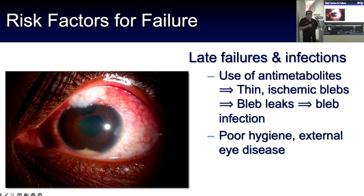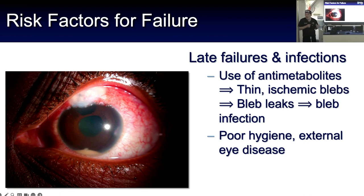This is a patient in whom I did a trabeculectomy in his 20s, and he showed up about 10 years later with a bleb that had purulence in it and a hypopyon. This is a bad situation. He had not been seen in our office for about five years and came in for an uncomfortable eye. Unfortunately, this eye did not do well because he presented with this.